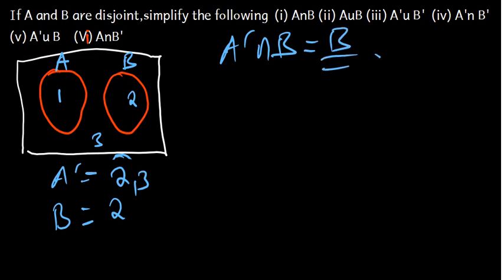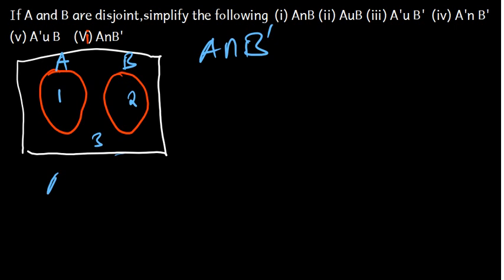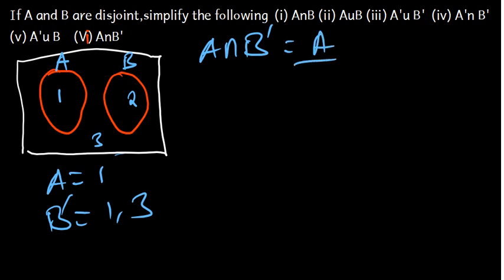Now let's go to Part 6: A intersection B complement. A is {1} and B complement is {1, 3}. The numbers found in both A and B complement is 1, which is the same as A. So the final answer is A.